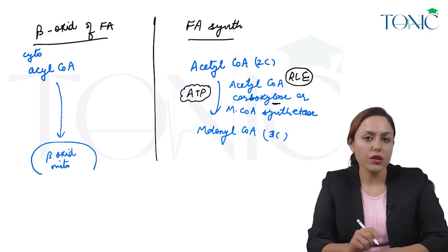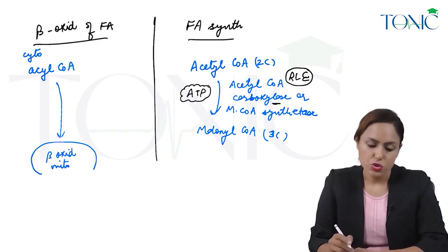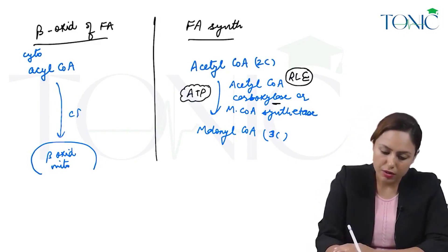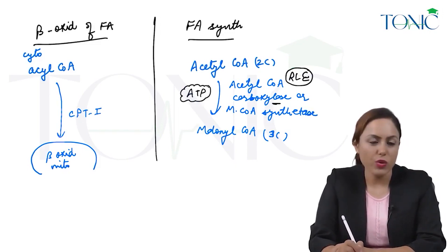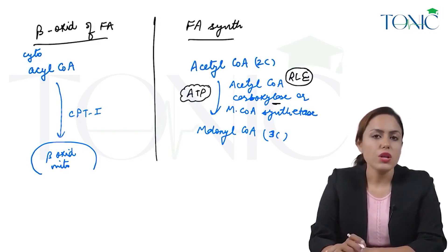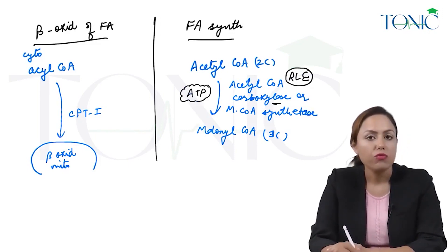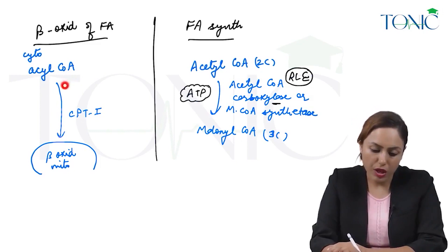So there is a guard, CPT1 enzyme, present here in the outer mitochondrial membrane which will allow the entry of acyl CoA into the mitochondria for beta oxidation.